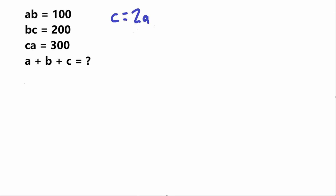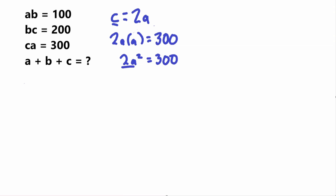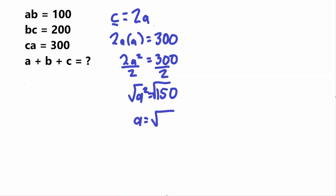Now that I have C equal to 2A, I'm going to plug this into the equation C times A equals 300. So instead of C, I put 2A: 2A times A is equal to 300, so that means 2A squared equals 300. Dividing by 2, A squared is equal to 150, and taking the square root, A is equal to the square root of 150.